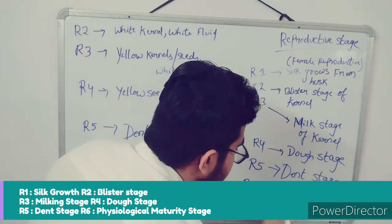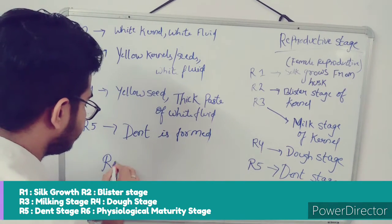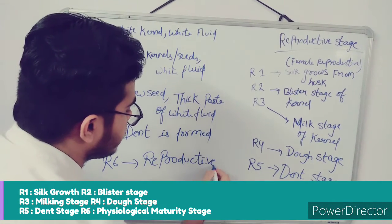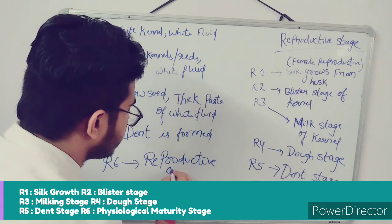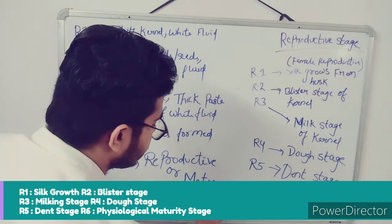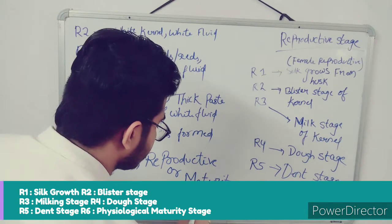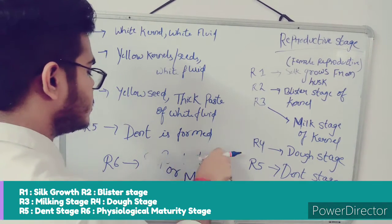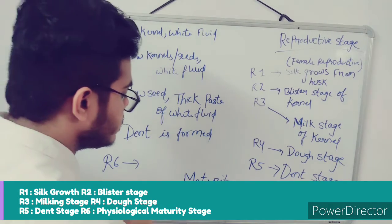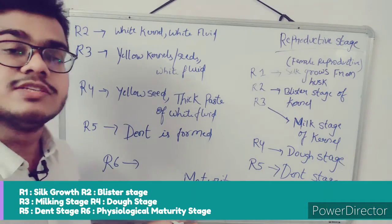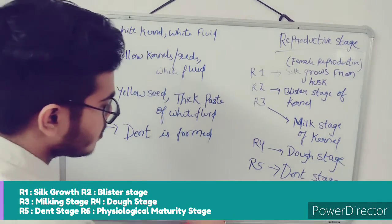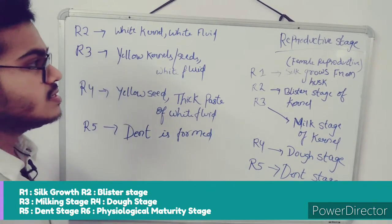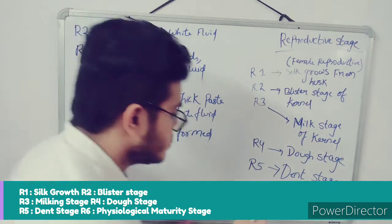R6 is the final reproductive stage — the physiological maturity stage. R6 is the maturity stage of the crop, where the maize plant is ready for harvest.